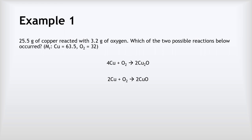In this question we're told that 25.5 grams of copper reacts with 3.2 grams of oxygen, and the question is asking which of the two possible reactions below occurred. Is it equation one where four coppers react with one O₂ to make two Cu₂O's, or is it equation two where two coppers react with one oxygen to make two CuO's? So the real question is: are we making Cu₂O or just CuO?